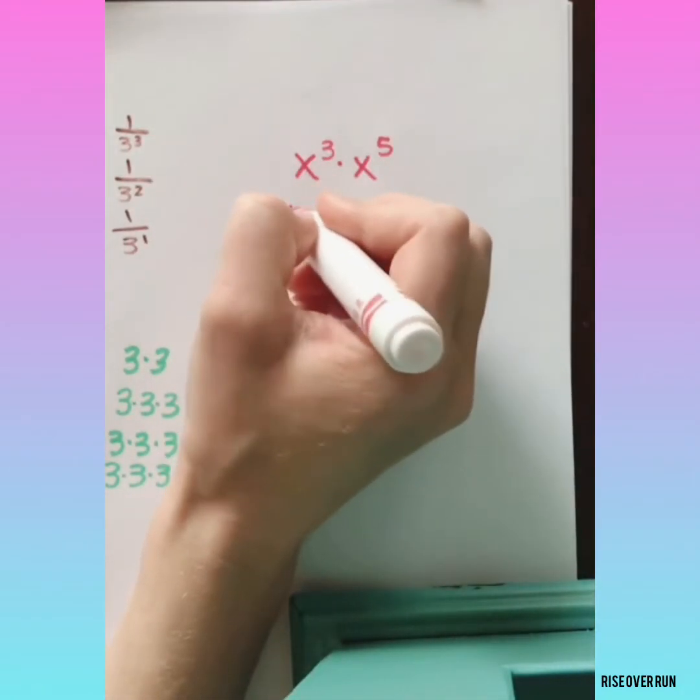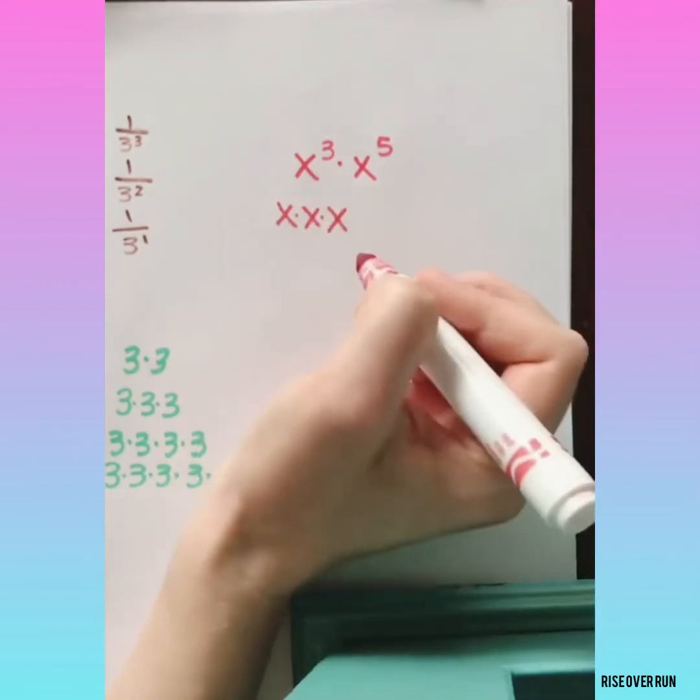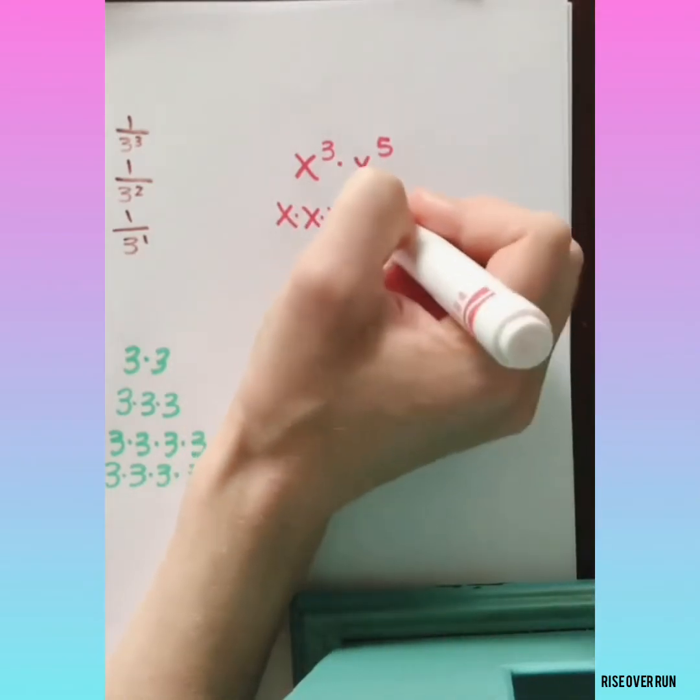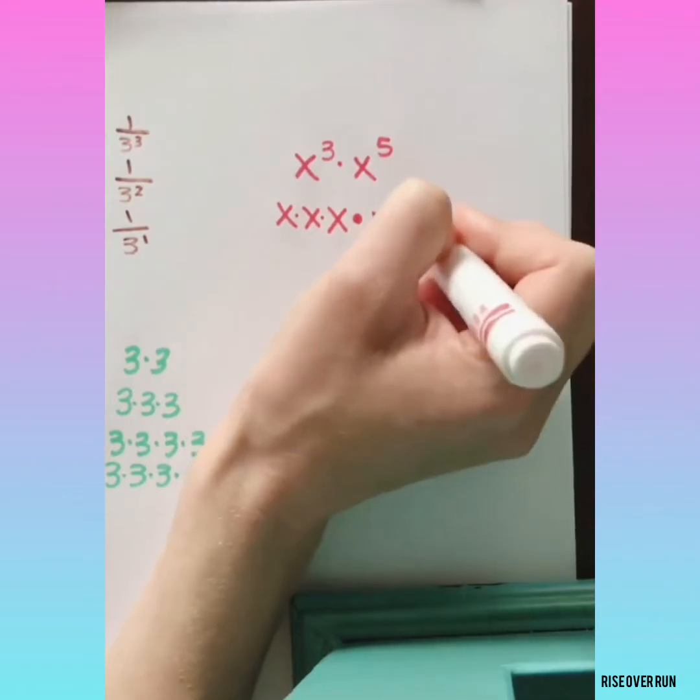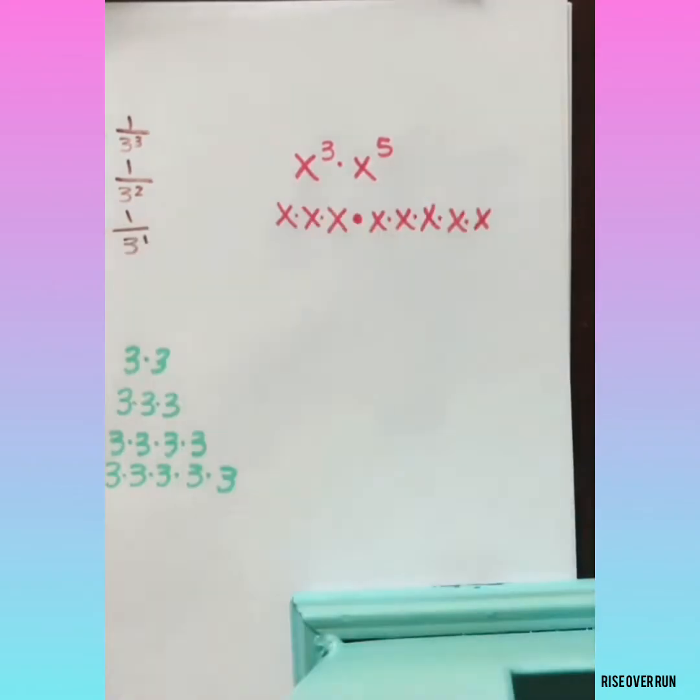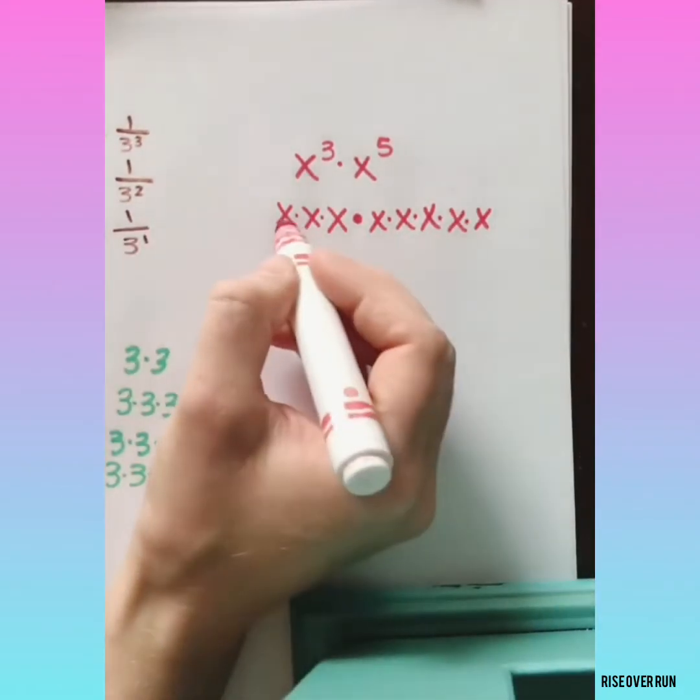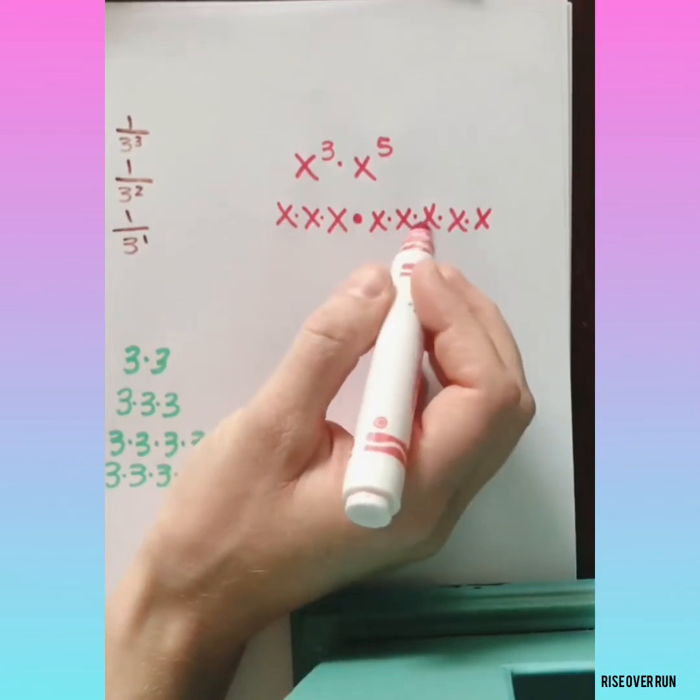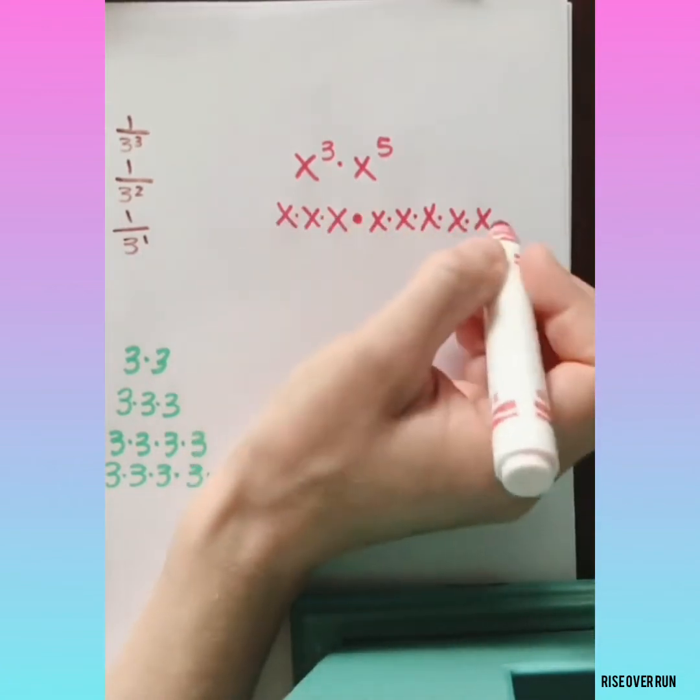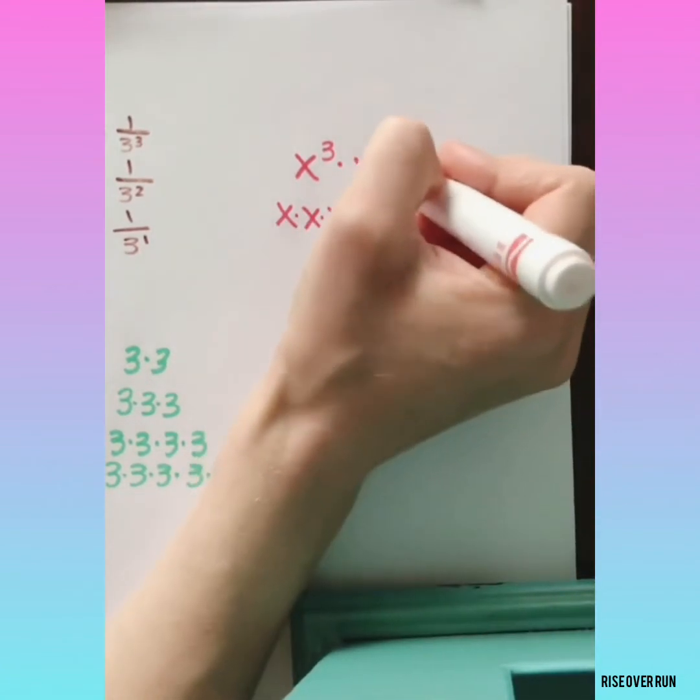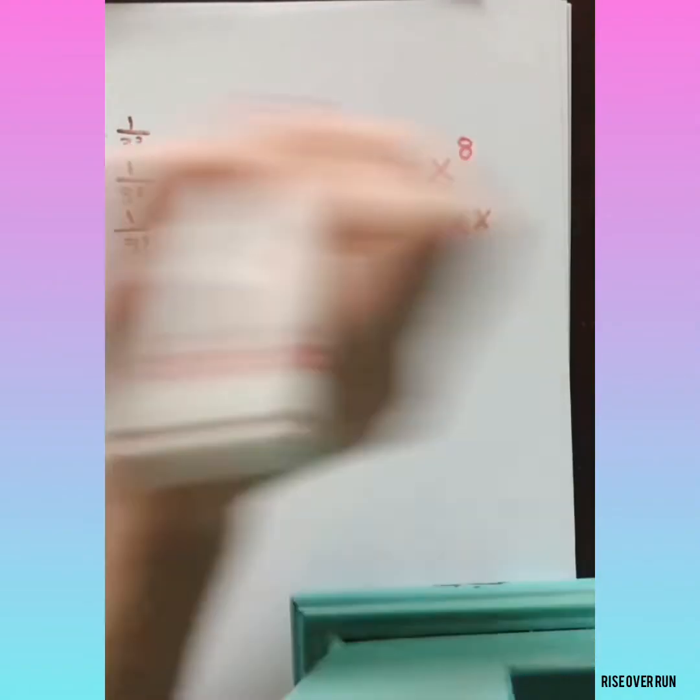x cubed means x times x times x. x to the 5th. Now we can see how many x's are multiplying themselves. We have 8 total, so this equals x to the 8th.